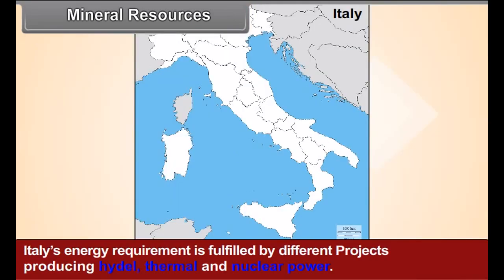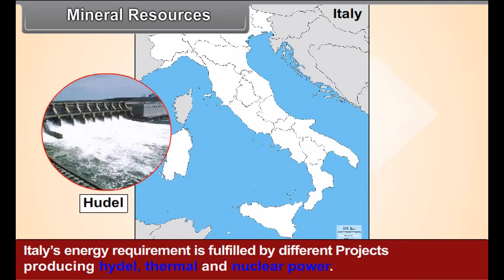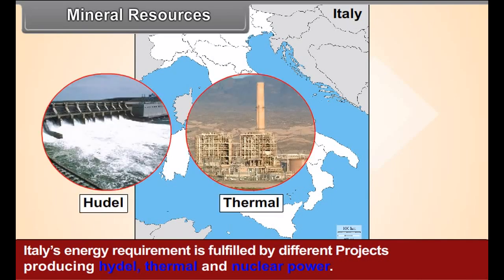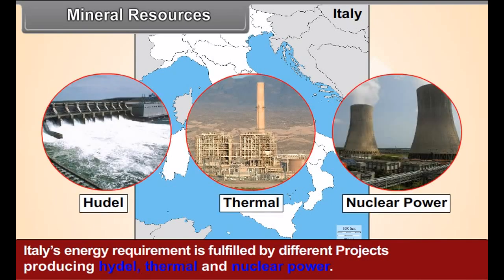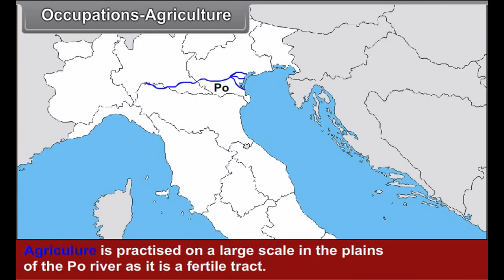Italy's energy requirements are fulfilled by different projects producing hydel, thermal, and nuclear power. Occupations — agriculture: agriculture is practiced on a large scale in the plains of the Po river, as it is a fertile tract.